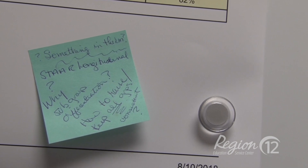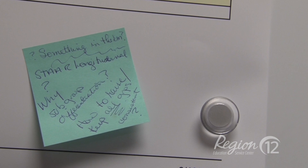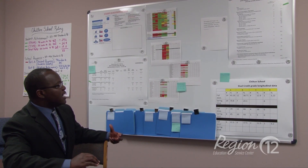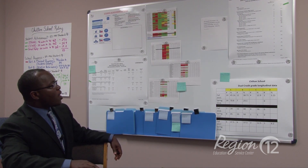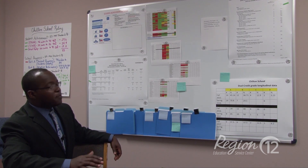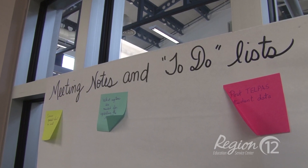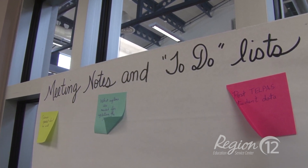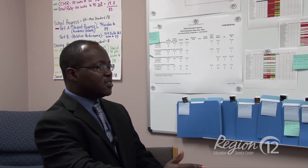The blue sticky notes are places where teachers can come in and, if they have a question about something — a question about certain data or how it relates to a domain — they can place the sticky on the whiteboard. Then during our PLC meeting time, we try to address each of those questions. We want every teacher, whether it's a core or non-core subject, to understand where they fit in with the accountability system.